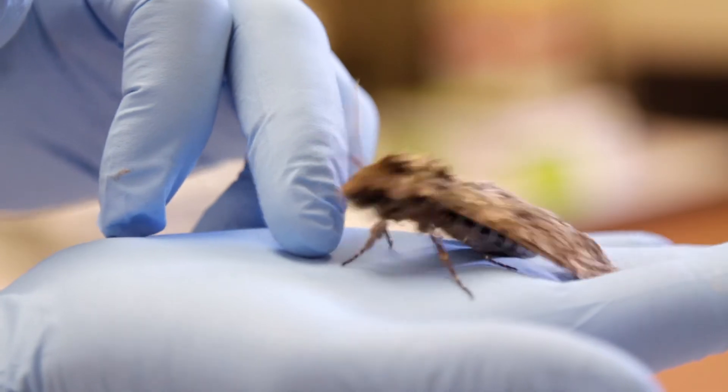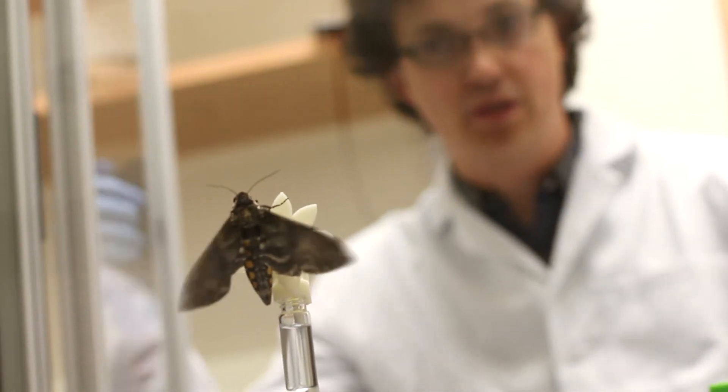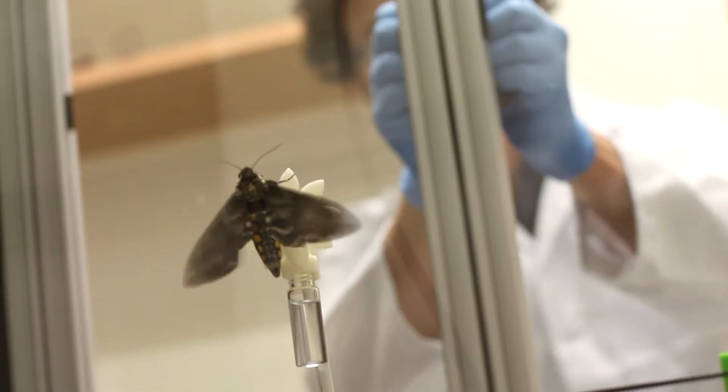So what we were setting out to do was to test some hypotheses about how the moths might be adjusting their neural processing in order to be able to see incredibly well in low light. What are the trade-offs that it might experience? What are the costs to doing so?